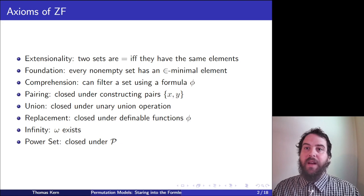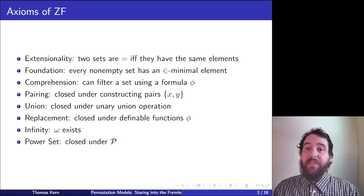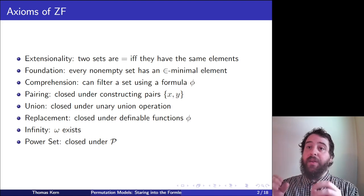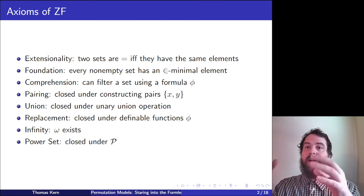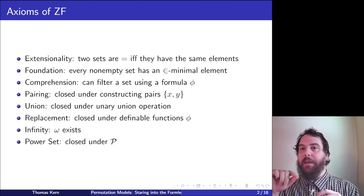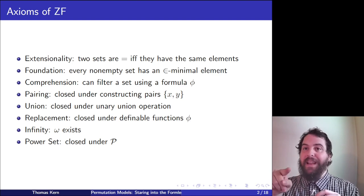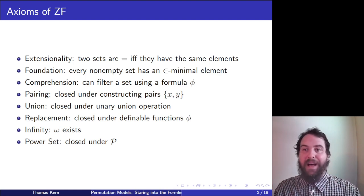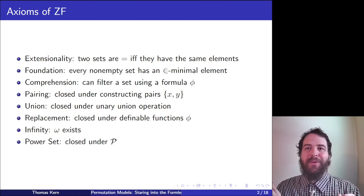I want to do a quick refresher of the axioms of ZF set theory. First, we have extensionality: two sets are equal if and only if they have the same elements. That is, if we have two sets A and B, they're equal if for everything in our set theory, that thing is in A and B, or not in A and not in B.